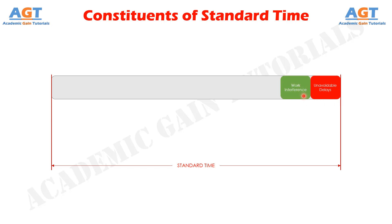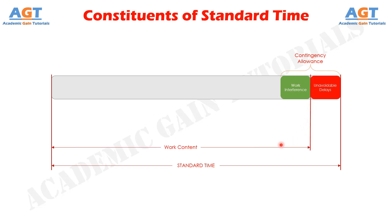There are also some work interference allowances. The work interference allowances time is included into the work content of the job to compensate the operator for the unavoidable loss of production due to simultaneous stoppage of two or more machines being operated by him. Together, these allowances for unavoidable delays and work interference allowances constitute the contingency allowance. Deducting the unavoidable delays from the standard time, we get the actual work content.